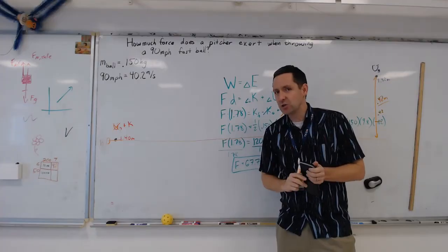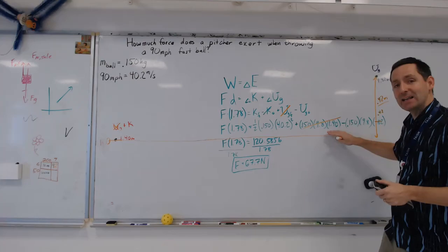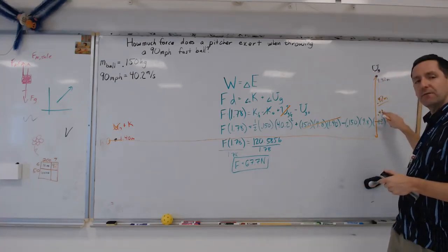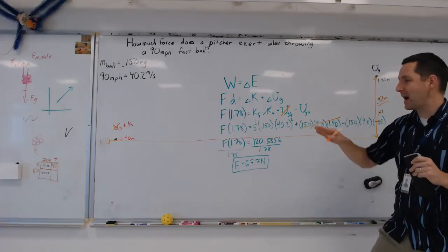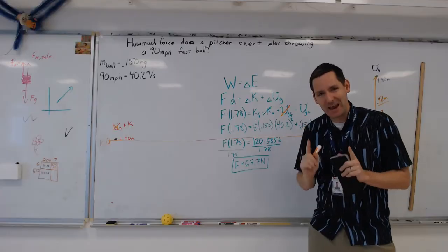In fact, I challenge you to try that on your own. Go ahead and punch in these numbers, don't use this, make that zero gravitational potential energy, and change this to 0.42, and show that by defining a different zero point, we still get the same answer.